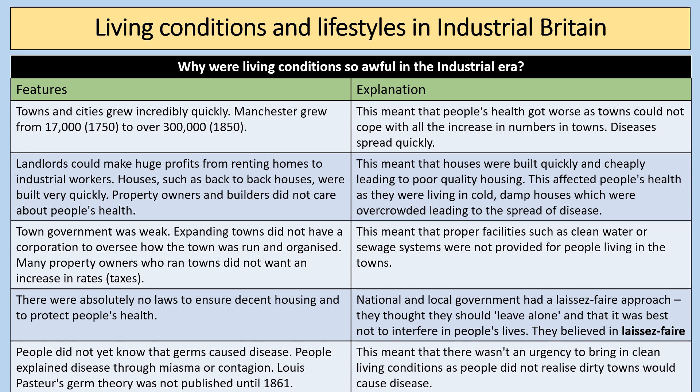Why were living conditions so awful? Firstly, towns and cities grew incredibly quickly — Manchester, for example, grew from 17,000 to over 300,000 — and the new towns couldn't cope with the increase in numbers, so diseases spread very quickly. Landlords made huge profits from renting homes to industrial workers. Houses like back-to-back houses were built really quickly and cheaply, so housing quality was poor — cold, damp and overcrowded — leading to the spread of disease. Town government was weak; expanding towns did not have a corporation to oversee how they were run, and property owners who ran towns did not want an increase in taxes.